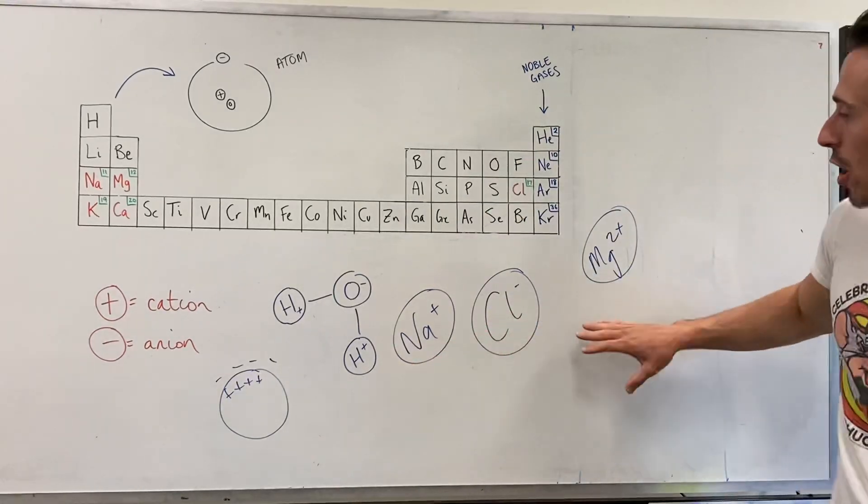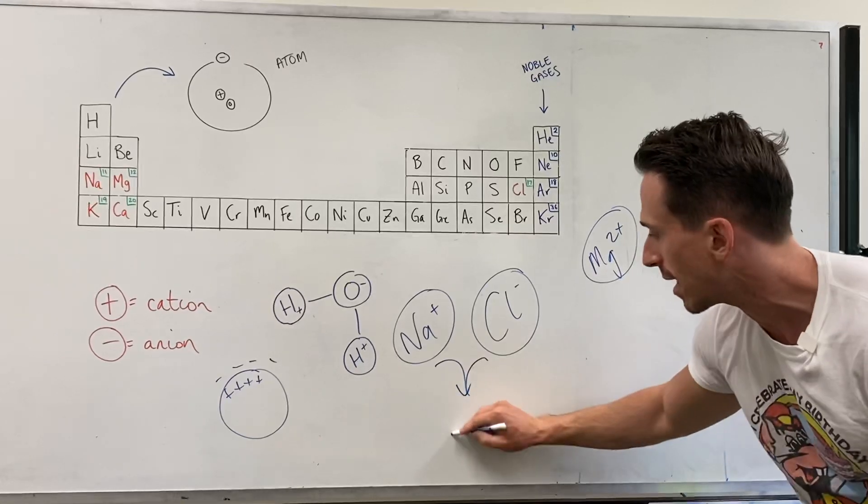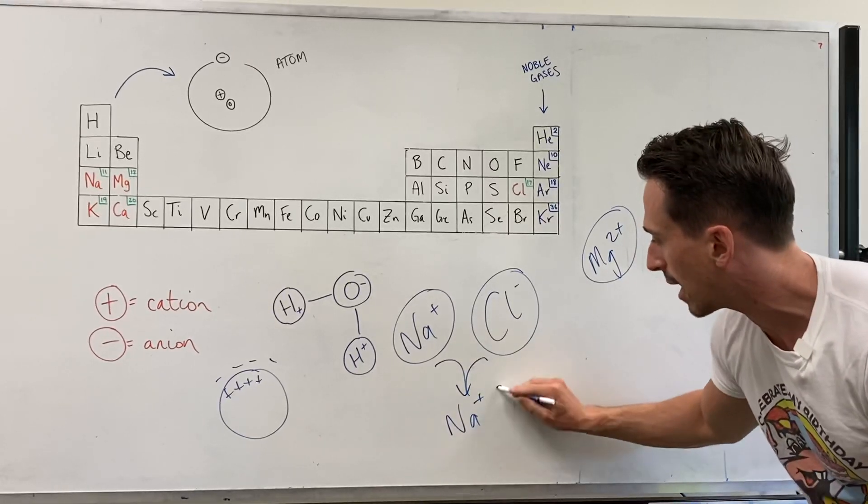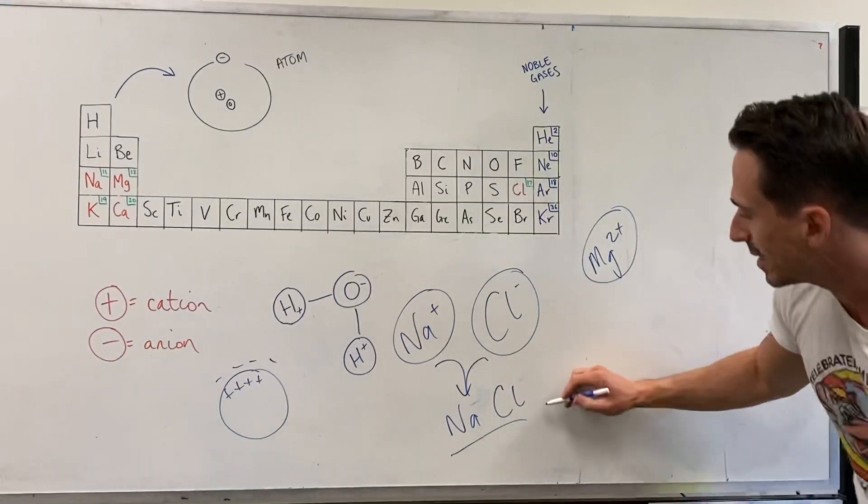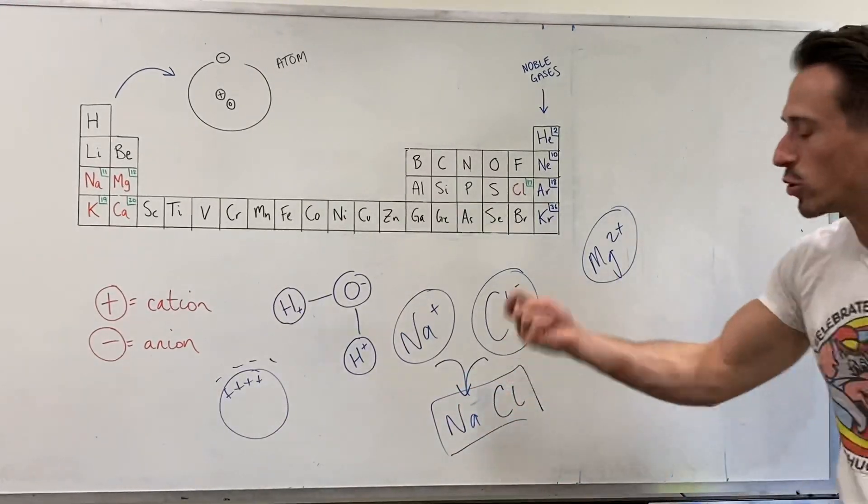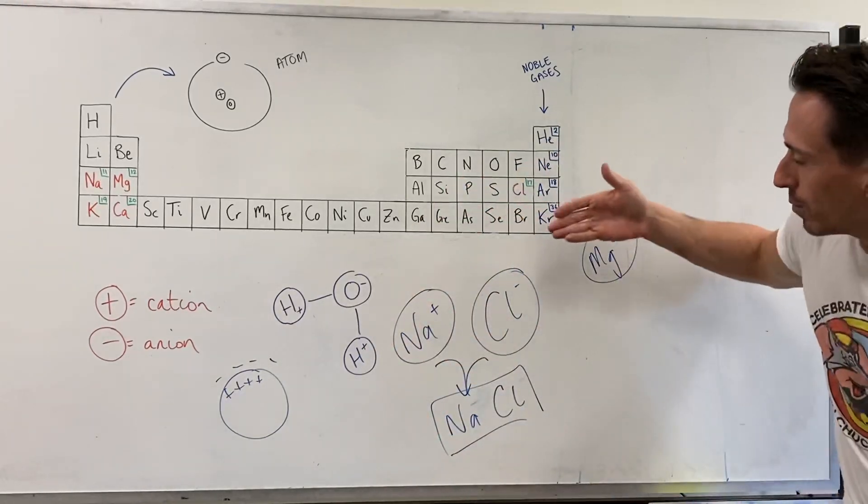Now we don't ingest these ions in this form usually. We usually ingest them in the salt form where they're bound together. Usually the positive balances out with the negative and we're left with that salt, like table salt, sodium chloride. This is actually the electrolyte. Once we ingest it, the water in our body dissolves it, breaks it apart, and it forms the ions.